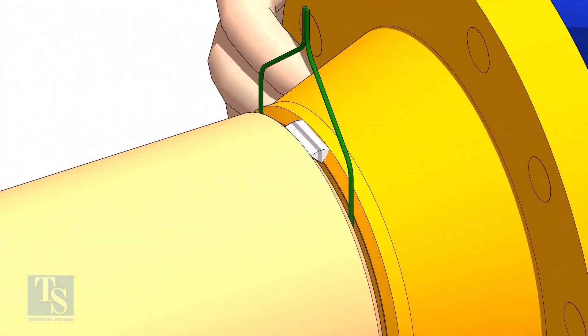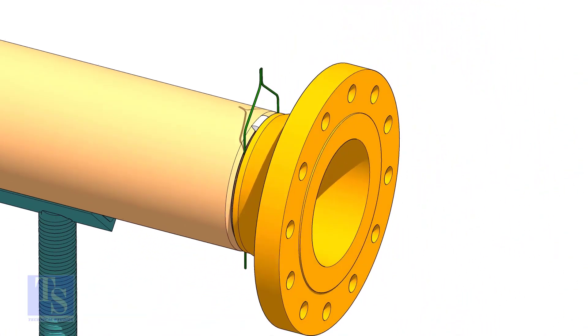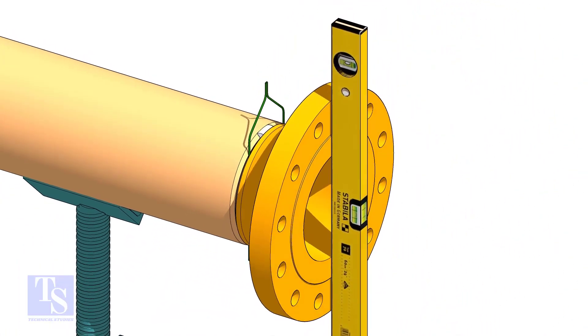Tack weld on the top side of the joint. Check the level of the flange vertically and tack weld on the bottom side of the joint.